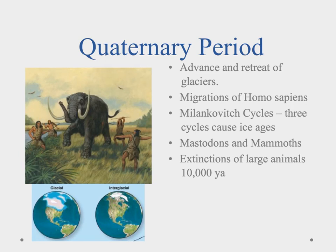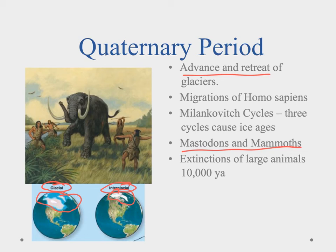This brings us to the quaternary period, which is our modern time. Geologically, what we're noticing is the advance and retreat of glaciers — we can see glacial times and then interglacial times. This coming and going of the glaciers would have drastically changed the climate in areas, and that's why we had larger animals like the mastodons and mammoths that could survive these changes. They were able to maintain body heat when it got cold and would migrate with the glaciers.